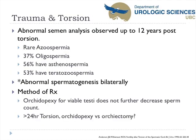Looking at trauma and torsion: abnormal semen analysis was found in about 12 years following injury. Azoospermia was quite rare, but oligospermia occurred in approximately 37%, asthenospermia in 56%, and teratozoospermia in 53%. Importantly, abnormal spermatogenesis was found bilaterally even after unilateral testicular torsion. Orchidopexy did not appear to decrease fertility rates further. In torsions beyond 24 hours, if there's any sign of a viable testis, it's probably worth retaining and pexing it, despite the risk of increasing the inflammatory response.